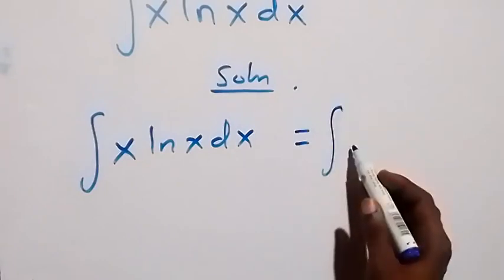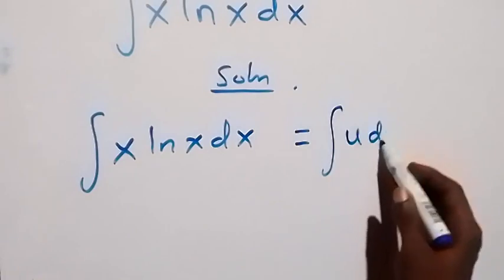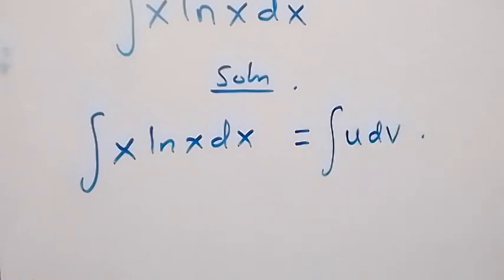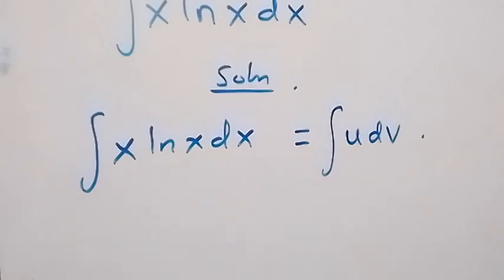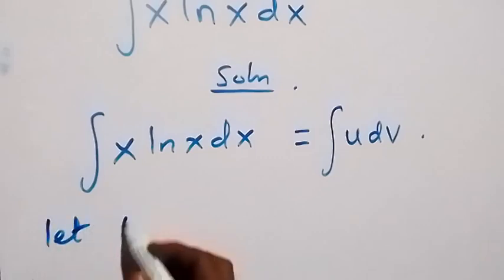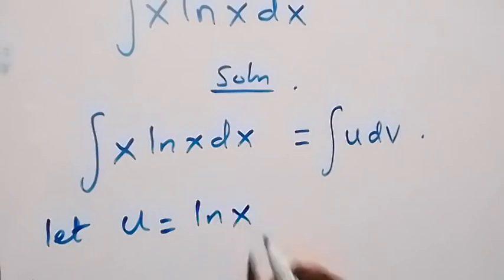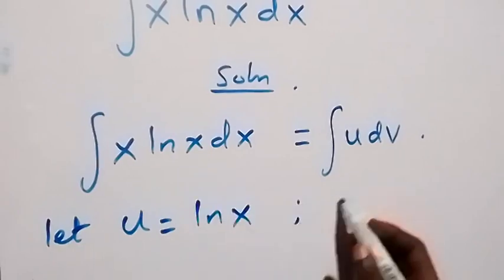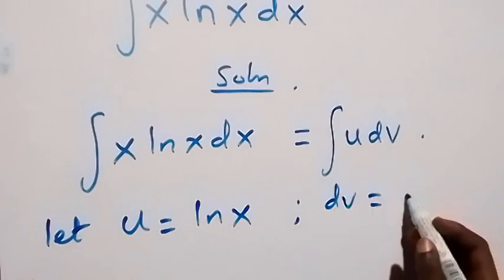We have integral in the form of u dv from here. And then from here we have to represent one of these as u and one as dv. So here let u be equal to ln x and here dv to be equal to x dx.